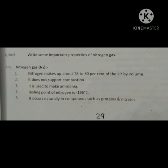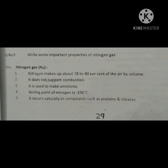Nitrogen gas — its formula is N2. Nitrogen makes up about 78 to 80 percent of the air by volume. It does not support combustion. It is used to make ammonia. The boiling point of nitrogen is minus 196 degrees centigrade. It occurs naturally in compounds such as proteins and nitrates.